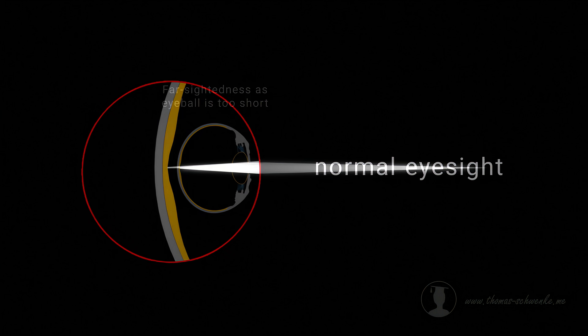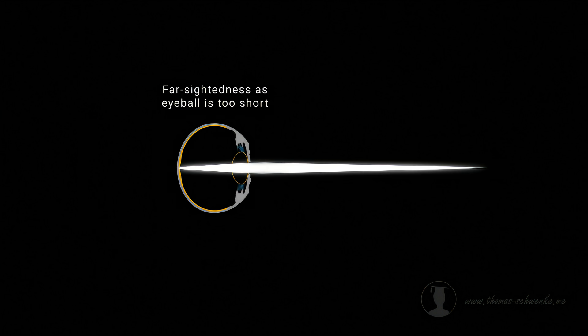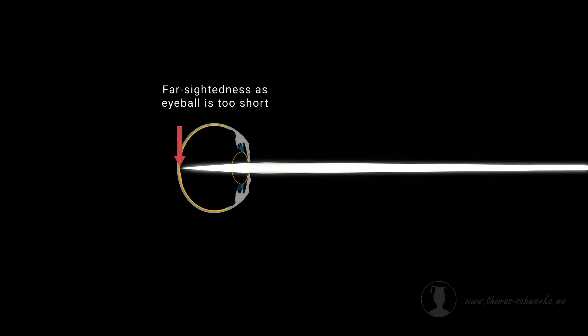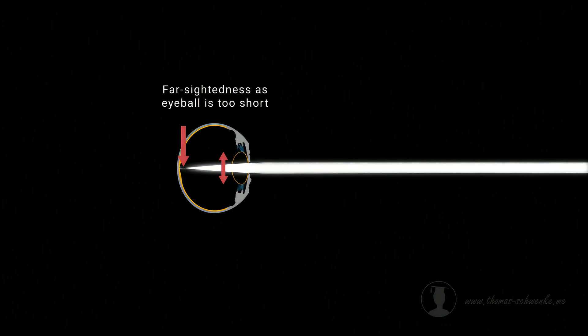With far-sightedness, the lens cannot shrink any further, which creates a blurred image. If the object moves further away, the image becomes sharp. If the object then moves even further away from the eye, the image becomes blurred again. But the lens can now widen accordingly, which makes the image sharp again.